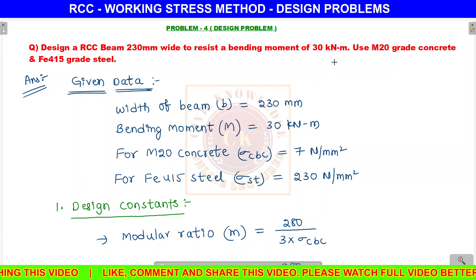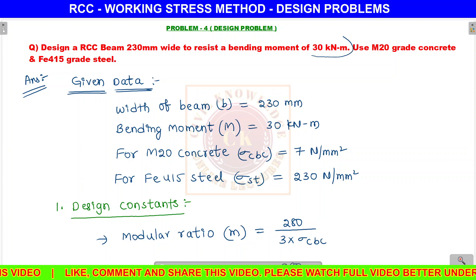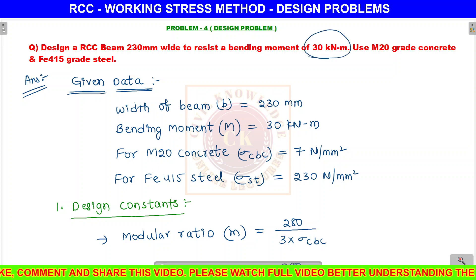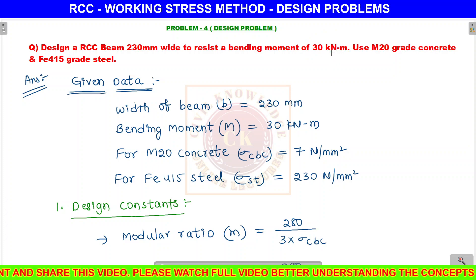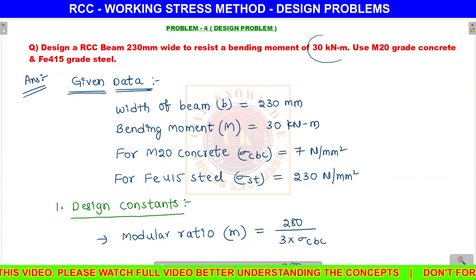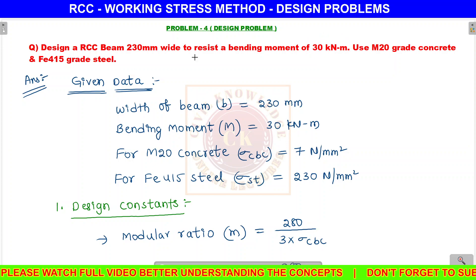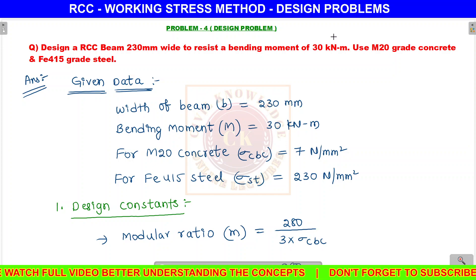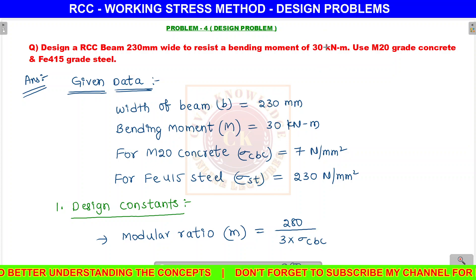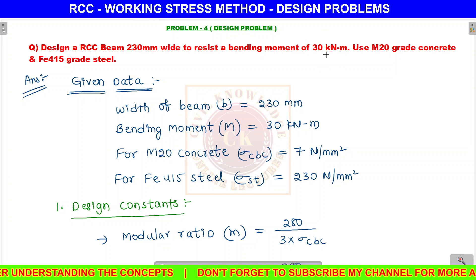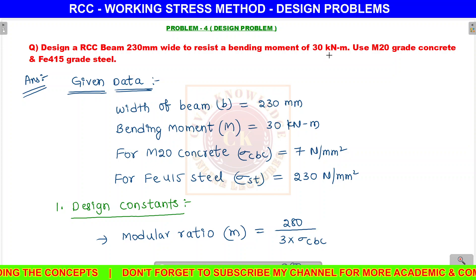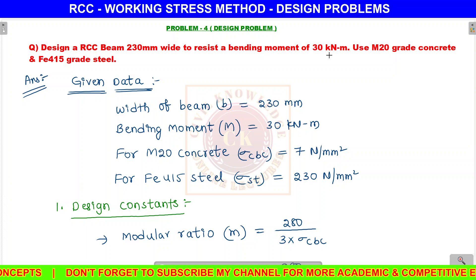For a rough design, we are given a bending moment. We will use an RCC beam. The bending moment is 30 kNm. We can use the beam when the bending moment is 30 kNm.